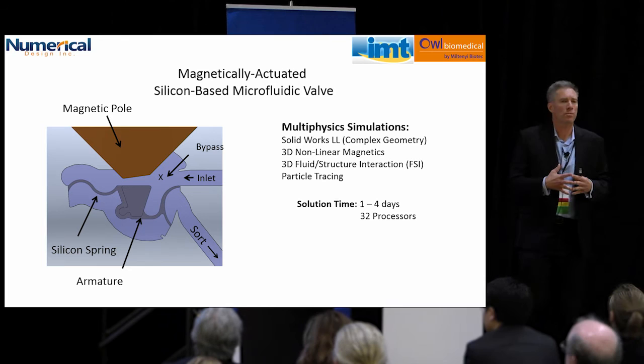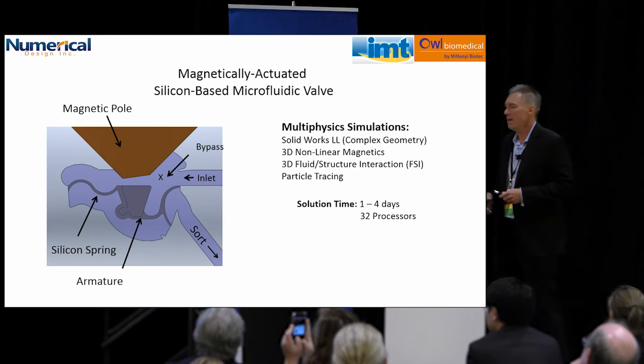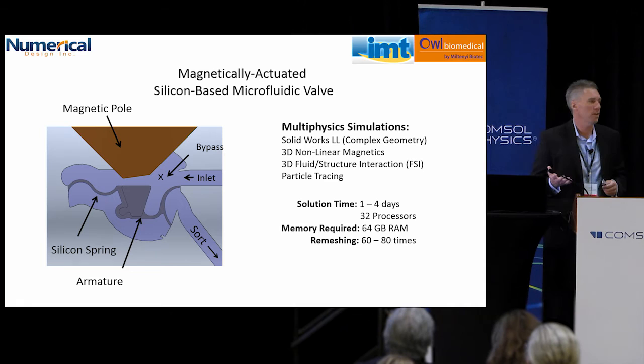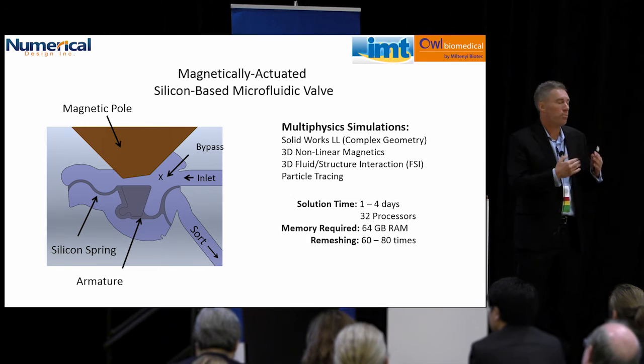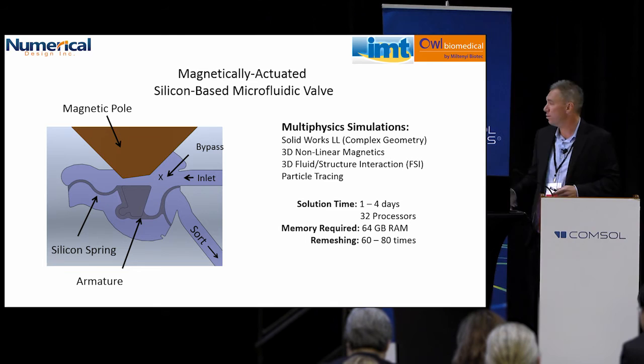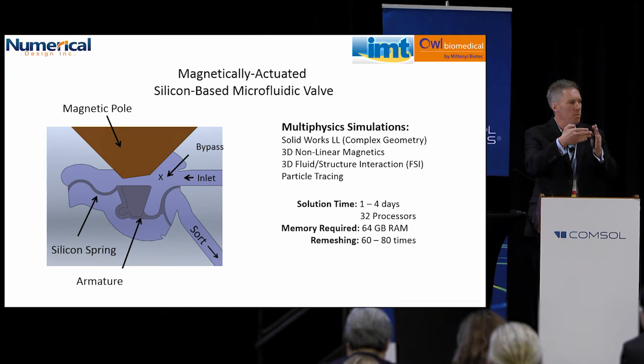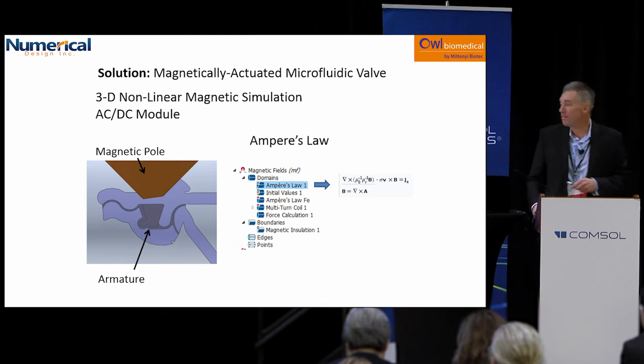Putting this simulation together took a couple of months. These problems typically take one to four days to solve on a 32-processor workstation and take about 60 gigabytes of RAM. Because of the complicated geometry, the mesh has to be remeshed — COMSOL has automatic remeshing and we remesh commonly 60 to 80 times per simulation. So it moves, warps the geometry, changes the mesh — we have to redraw the geometry, remesh it, resolve it, and restart it. It's a very involved process.